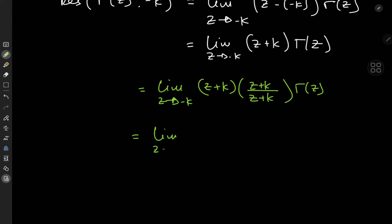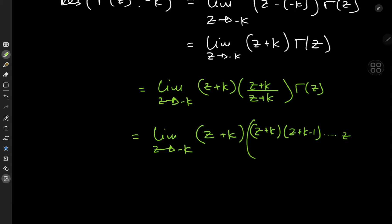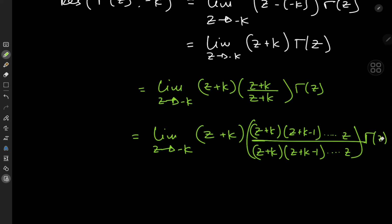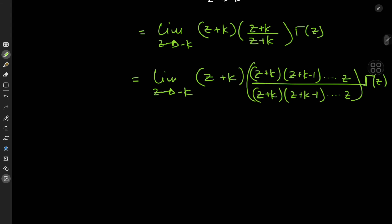We have the limit as z approaches −k of (z + k) times an ever-so-complicated version of 1: a (z + k) term, times a (z + k − 1) term, introducing terms all the way down to a z term at the end. We have exactly the same structure in the denominator — (z + k)·(z + k − 1)···z — and this is all multiplied by Γ(z).